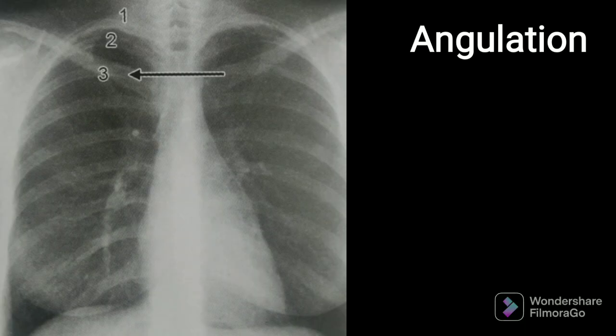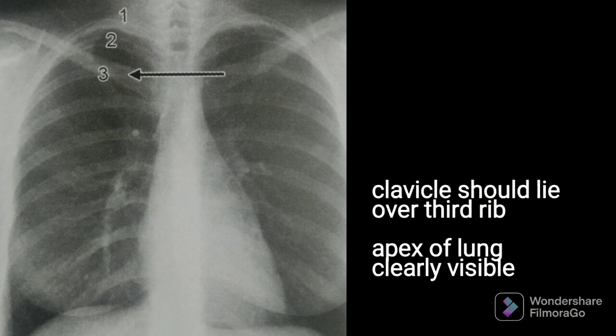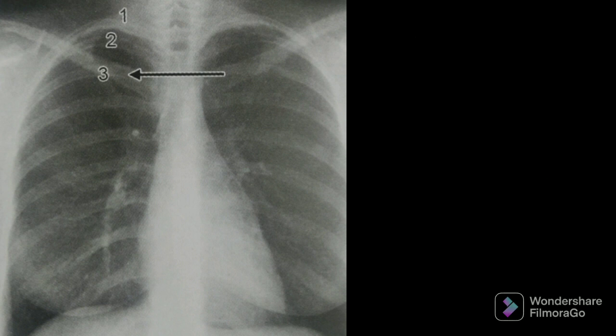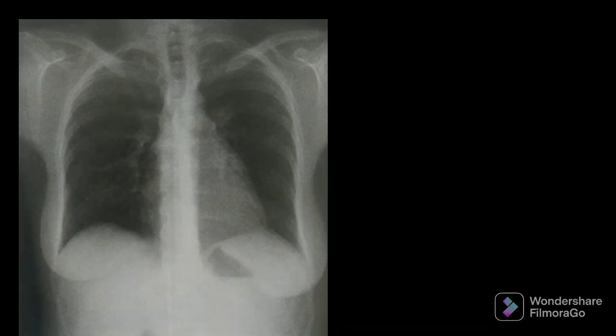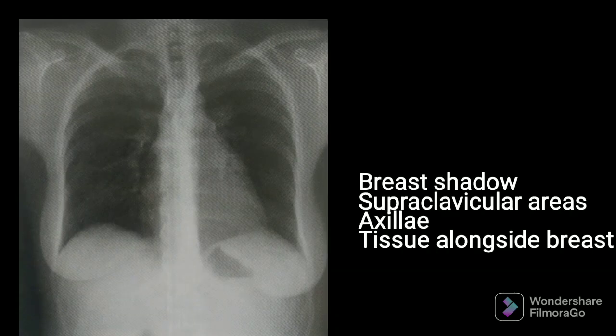For normal angulation in a chest x-ray, two things apply: the clavicle should lie over the third rib, and in proper angulation the apex is easily visible. Talking about soft tissue, the major soft tissues seen are the breast, the supraclavicular area, and the axilla.